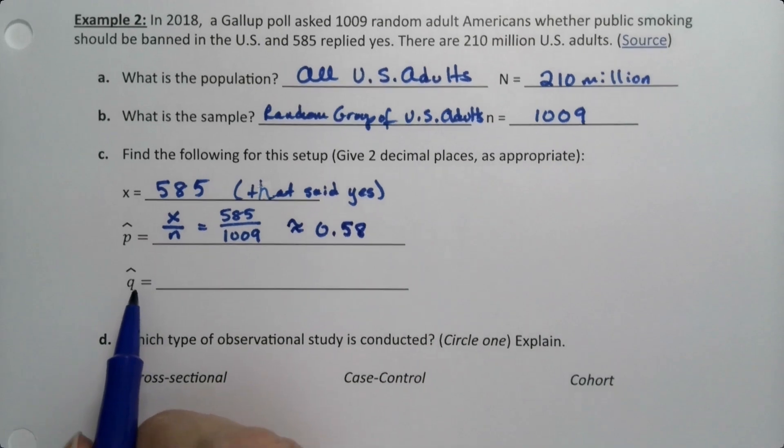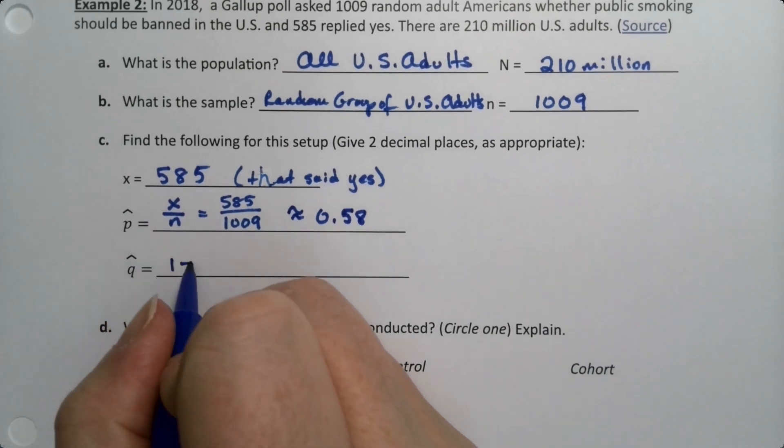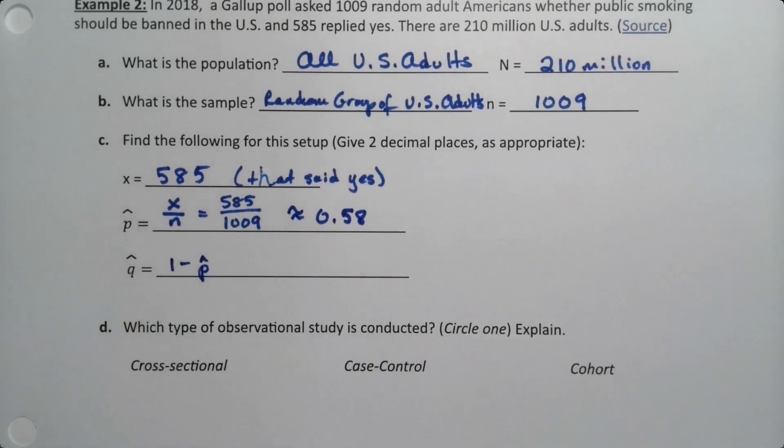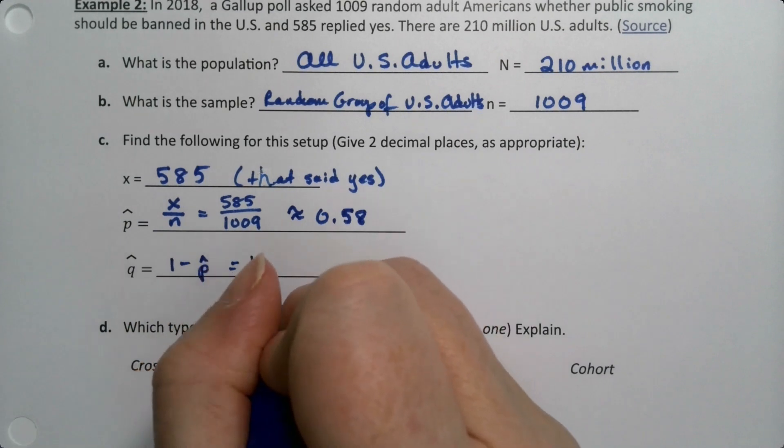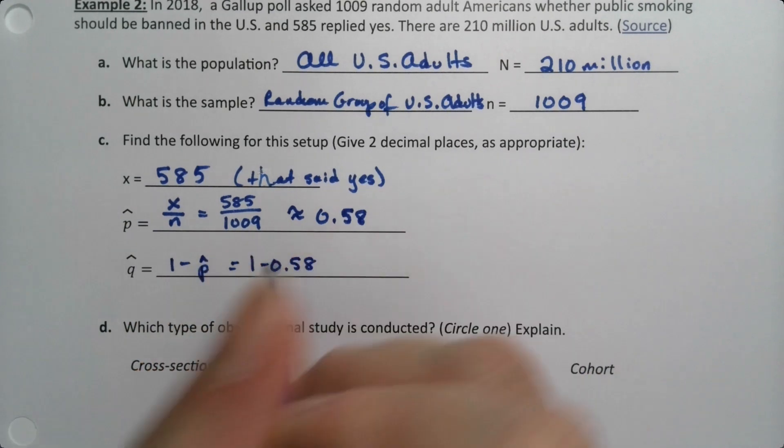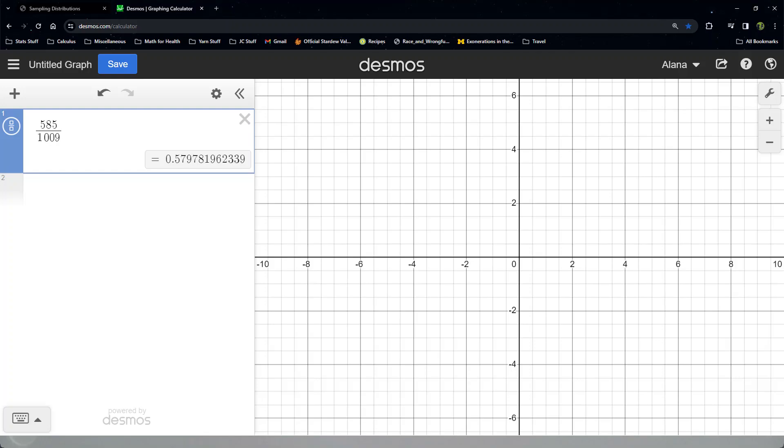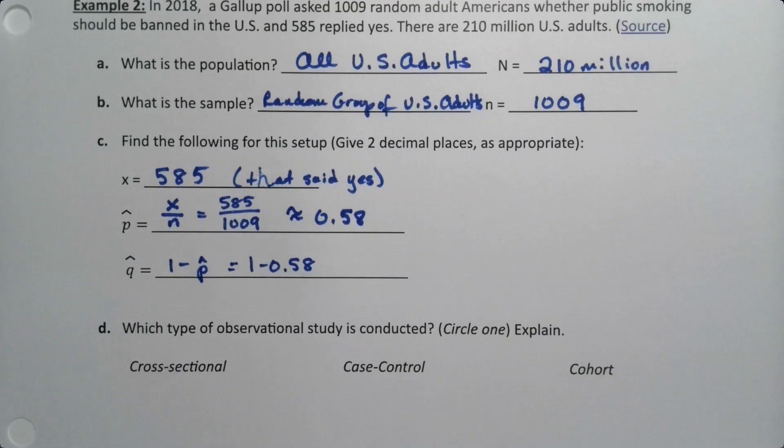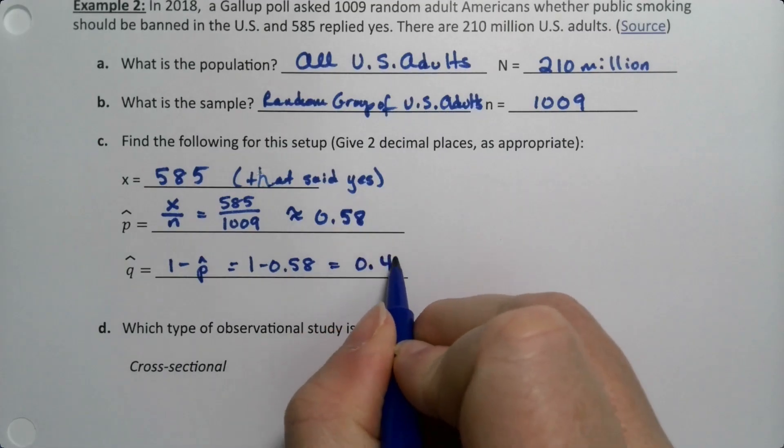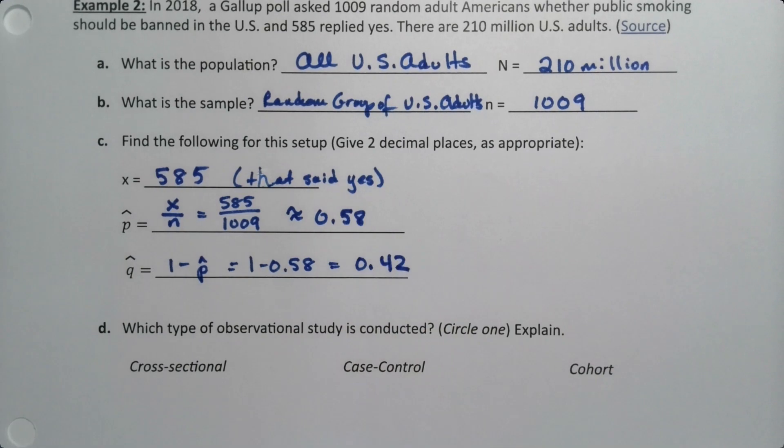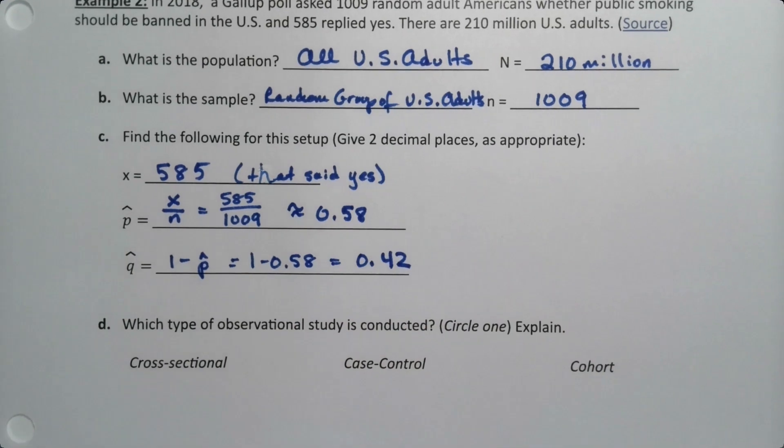Now q̂, we learned back in chapter 6 that it's 1 minus p̂. So that would be 1 minus 0.58, which we can grab decimals again real quick. 1 minus 0.58 is 0.42. There we go.